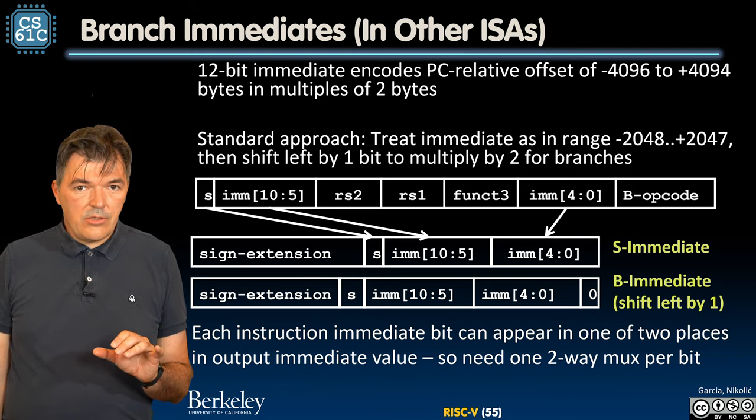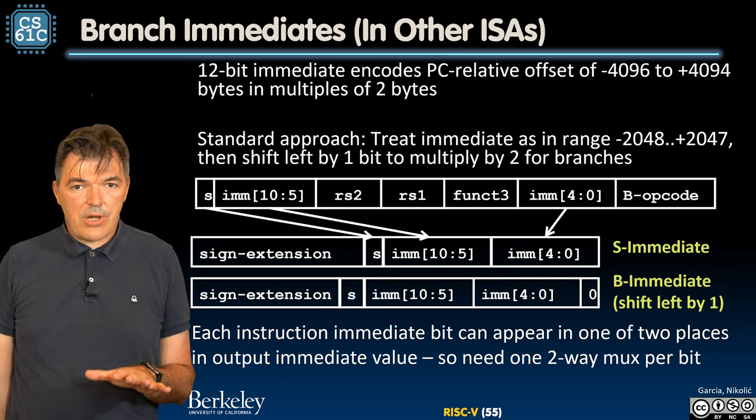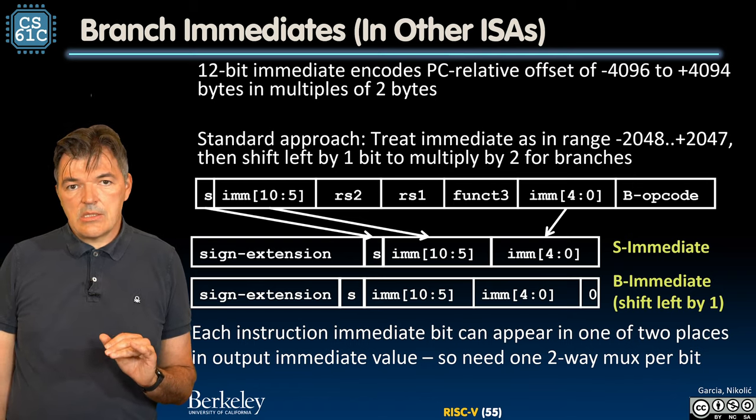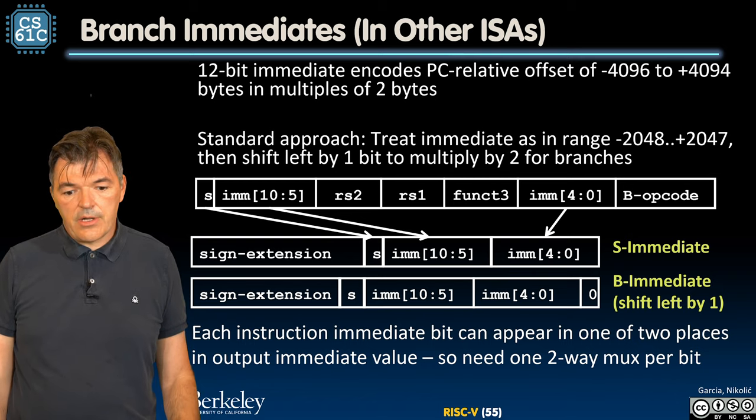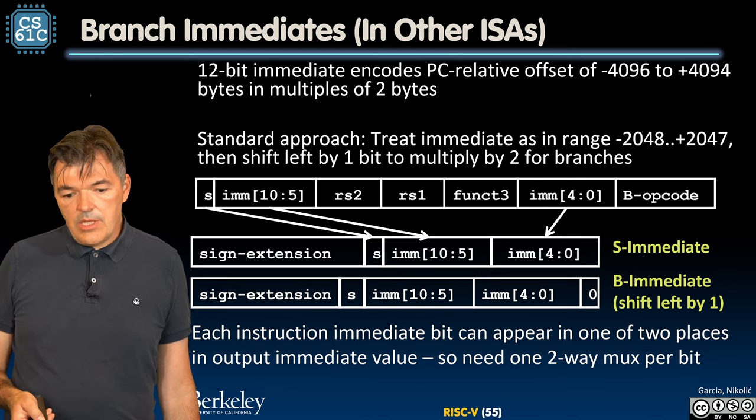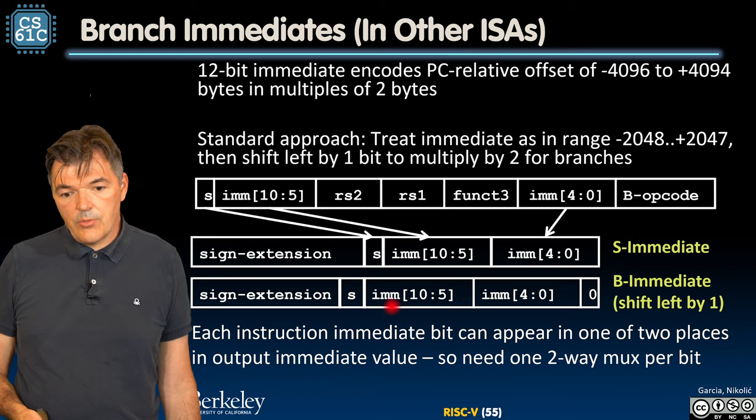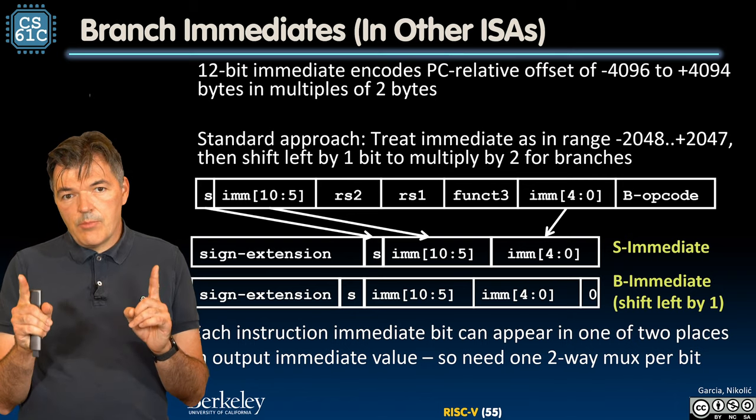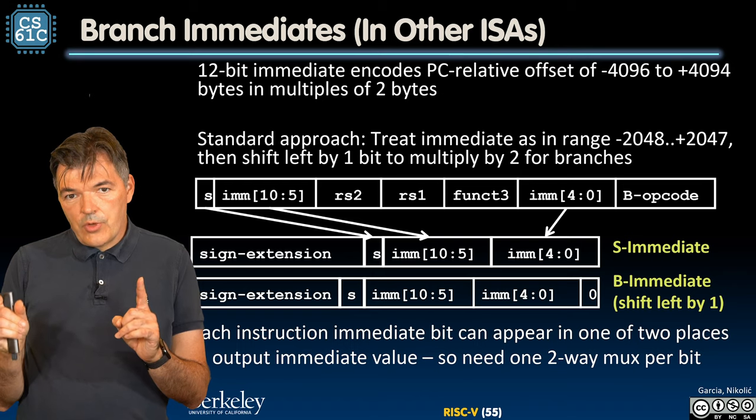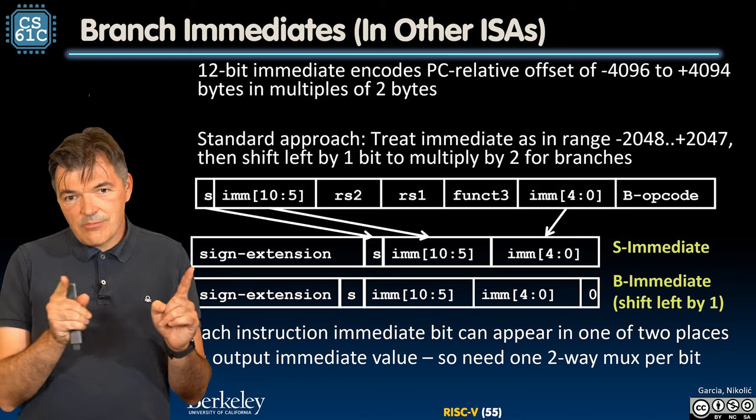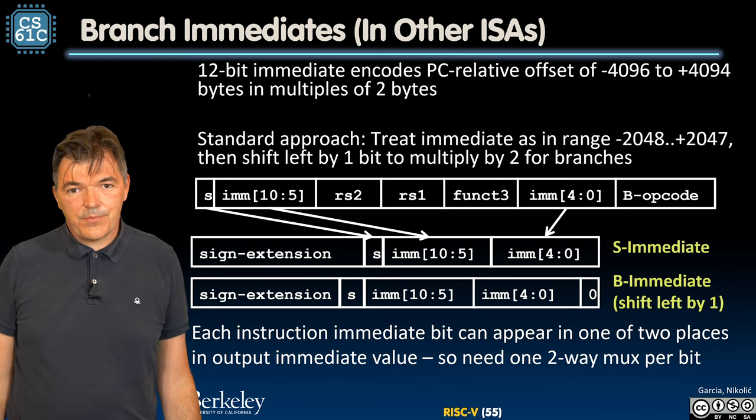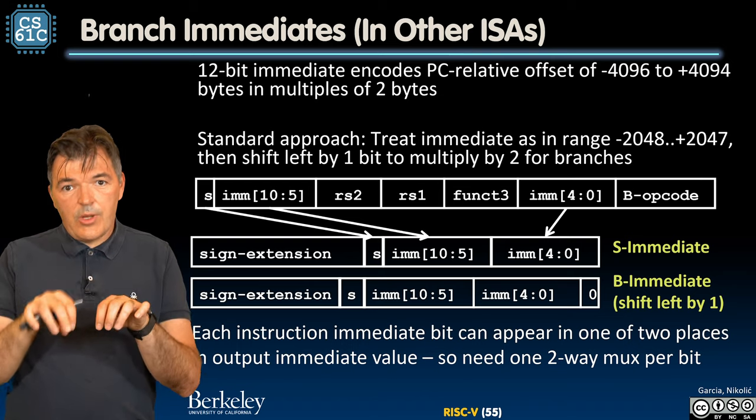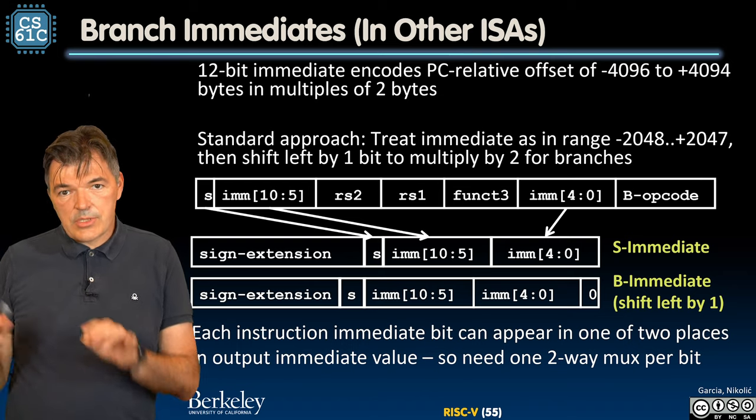The other important thing to mention about branches and encoding of immediates in B types is the difference of RISC-V from some other ISAs. In other ISAs, the immediate value, the whole immediate value is shifted by one bit in the instruction encoding, which requires us to use a wide multiplexer that shifts left or right what we would like to pick as an immediate from the instruction. So there are 12 inputs to a multiplexer that produce 12 outputs, but all of them are occupied.